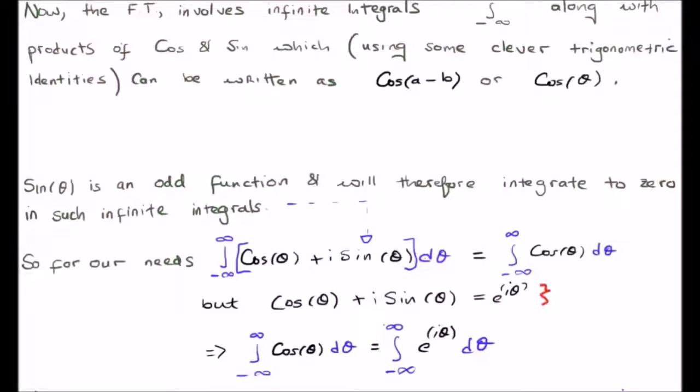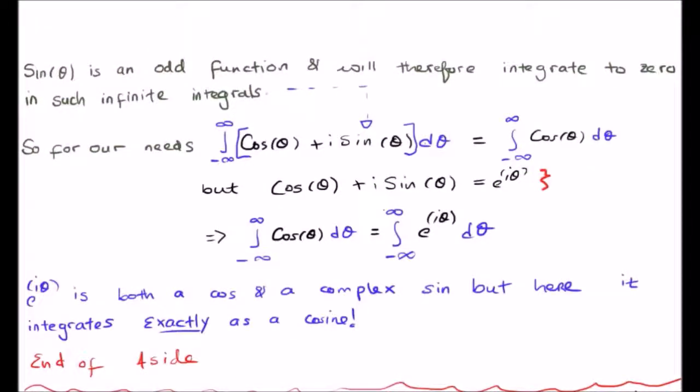The reason it's useful to go from using the trigonometric function cosine to complex exponentials is that complex exponentials are very easy to manipulate. So, the point here is that e to the i theta is both a cosine and a complex sine.